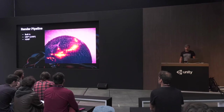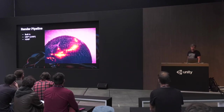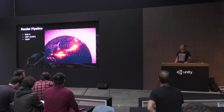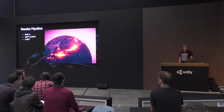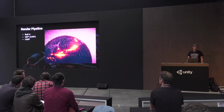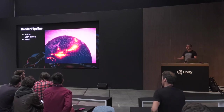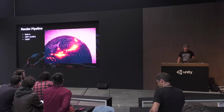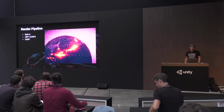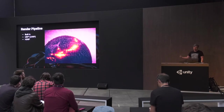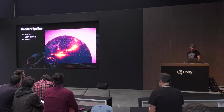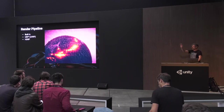One of the first choices you have to make when starting something new is what render pipeline. This talk is geared heavily towards the built-in because it's still the one most people use. The Universal Render Pipeline — still kind of the Lightweight Render Pipeline — is another choice for mobile and VR. I've been using it on several VR projects lately. And in HDRP you can actually use VR now.